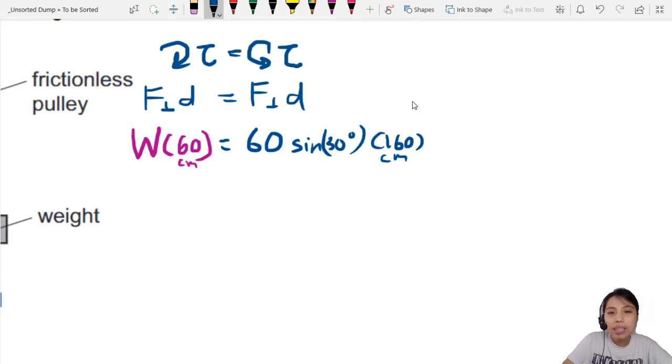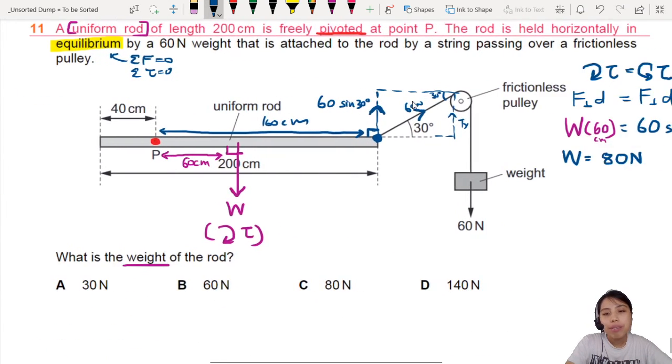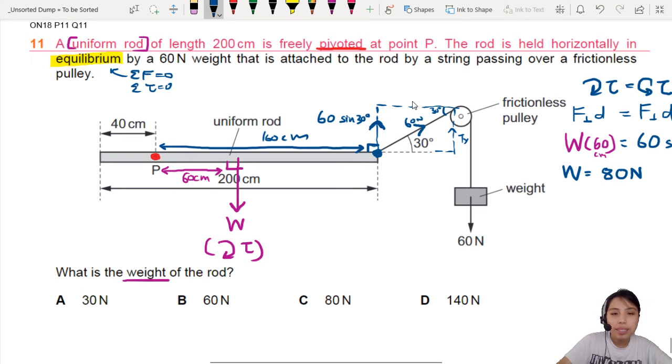Then, if you find that we can actually calculate W now. So, let's do that calculation for W. So, I got 80. I think 80. So, 80 newtons is the weight of the rod using this method. Okay. So, you can look around. Oh, 80. There it is. So, the answer is C.